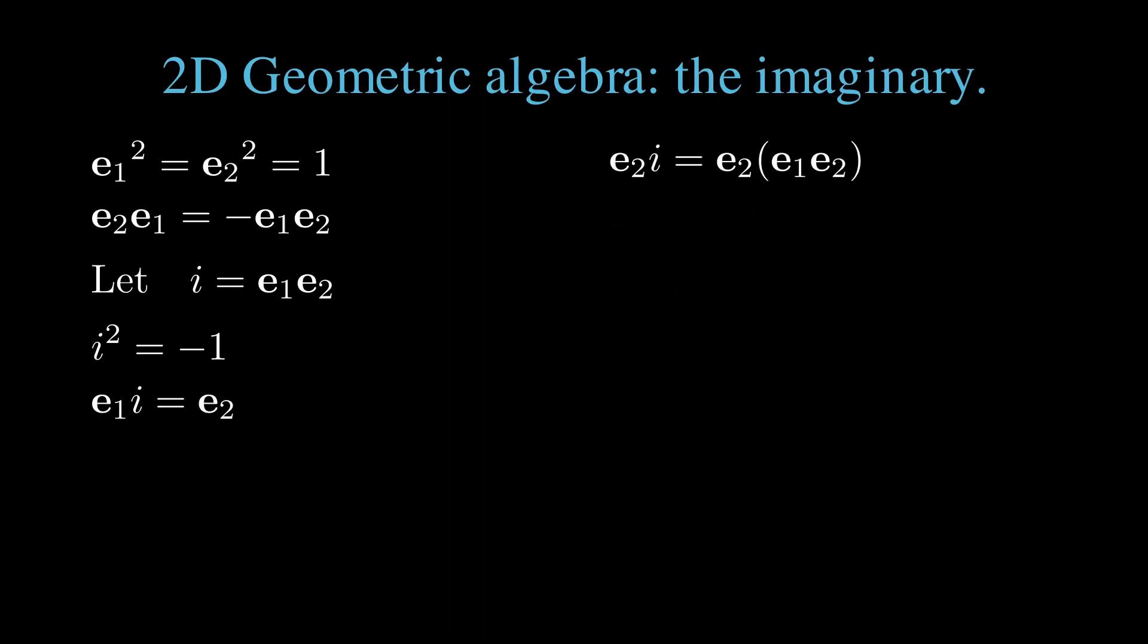Now we expand e2 times i, we use the anticommutative property to flip the order of the last two terms, changing the sign, regrouping, we find e2 squared, which is 1, leaving minus e1.